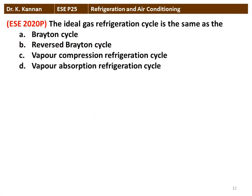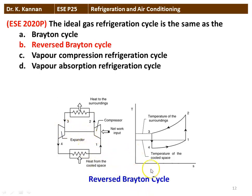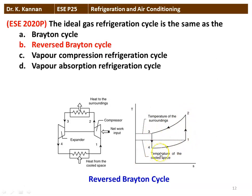The next question: the ideal gas refrigeration cycle is the same as — the Brayton cycle, the reversed Brayton cycle, the vapor compression refrigeration cycle, or the vapor absorption refrigeration cycle? The correct answer is the reversed Brayton cycle. Process 1 to 2 is isentropic compression; 2 to 3 is constant pressure cooling (condenser); 3 to 4 is isentropic expansion in the expander; and 4 to 1 is heat addition in the evaporator. This is the reversed Brayton cycle, which is the ideal gas refrigeration cycle.